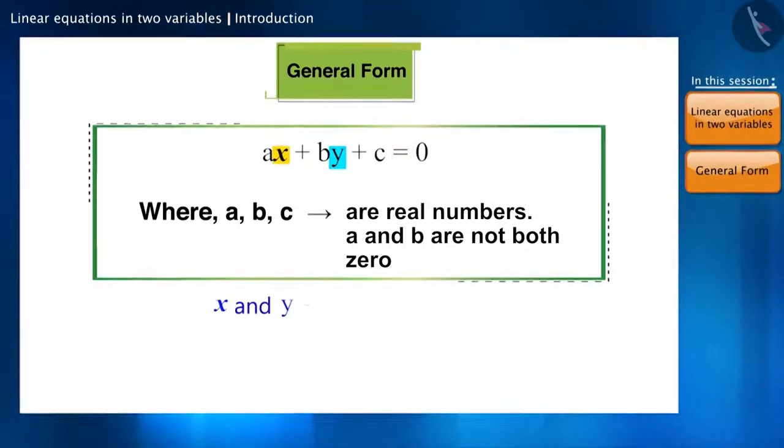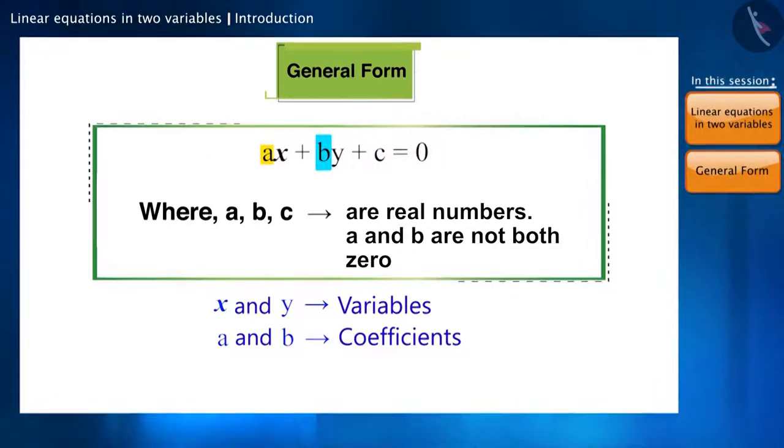Here X and Y are the variables, a is the coefficient of X, b is the coefficient of Y, and c is the constant.